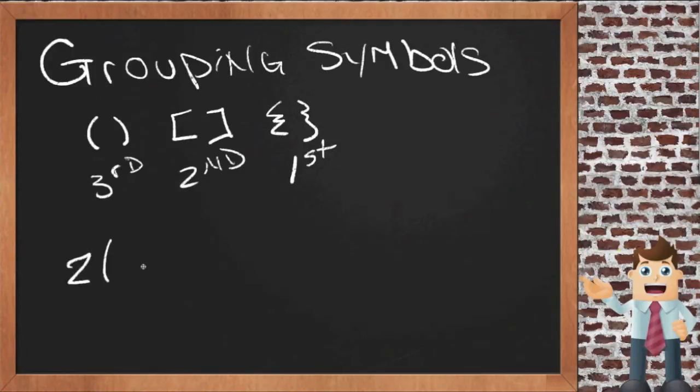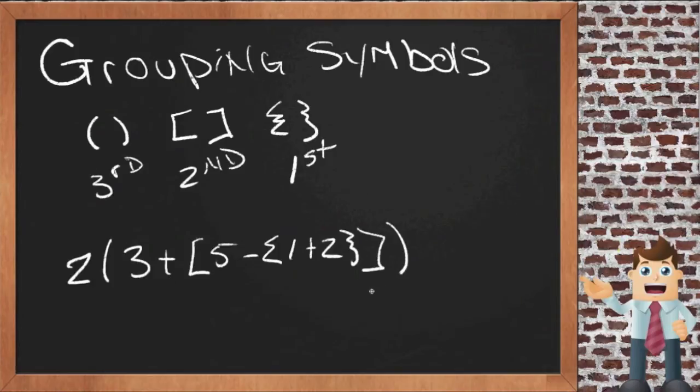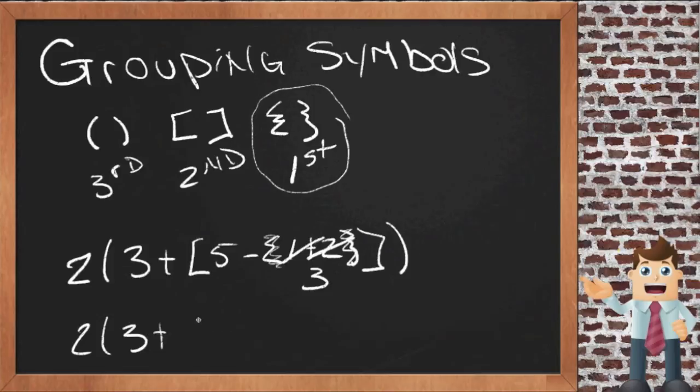maybe I'd have something like two times three plus five minus one plus two. So let's take a look at this. This looks like a mess, but as long as you break it down into individual pieces, it's not that hard. So we complete everything inside the braces first, which means we'd do one plus two first. That would give us three. So we're going to replace that one plus two with a three. Now we're done with these braces. We've done everything inside of them, so we don't need them anymore. So now we have two times three plus five minus three.